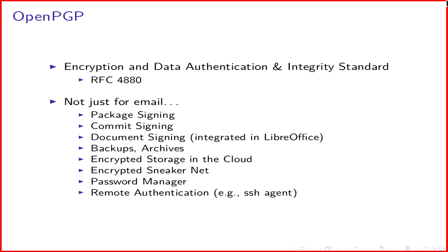OpenPGP is used for package signing — whenever you download a package from a Debian archive, apt automatically checks that the signature is good. It's also used for commit signing, document signing, backups, archives, encrypted storage in the cloud, and encrypted sneaker-net. If you have a USB stick and want to encrypt some files to bring somewhere else, you can't use something like Signal for that. There are also password managers that use OpenPGP, and you can do remote authentication using OpenPGP. It's a very general purpose standard.